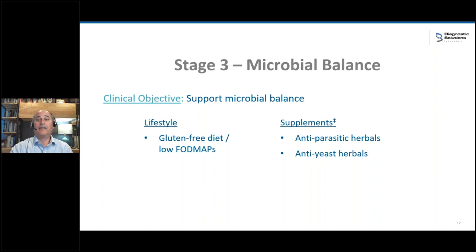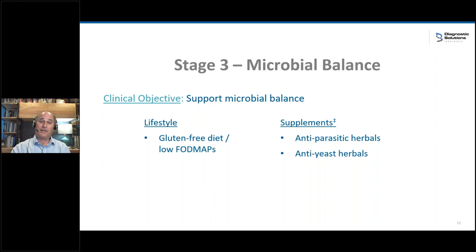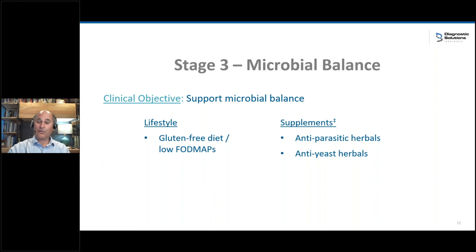In stage three — the pathogen side — we just like to kill things. Usually we put someone on a gluten-free diet, maybe a FODMAP diet, while doing the treatment. We go after whatever bug it is with herbal antiparasitics, herbal anti-yeast products, and often different antibiotic or antifungal prescriptions depending on the circumstances. It's an aggressive phase of treatment but often necessary. The important thing to realize is that pathogens are a problem because of the microbiome and organ disturbances — it's usually not the other way around.